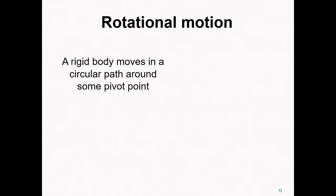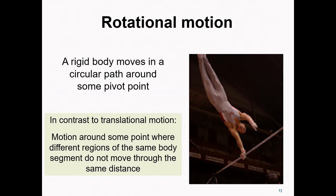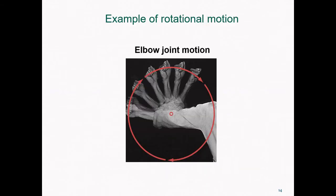In rotational motion, a rigid body moves along a circular path around some pivot point. Here we see a gymnast on a high bar. The first thing to notice is that the translational motion of different body parts is very different — the feet are moving through space much quicker than the pelvis. In contrast to translational motion, we're seeing motion around some point, with different regions of the same body segment not moving through the same distance. We can see an example of rotational motion in elbow flexion and extension — this rotational motion follows a circular path, and the center of that circle provides the pivot point and the axis of rotation.